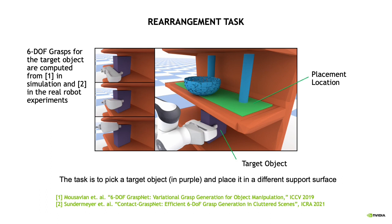More concretely, the rearrangement task entails picking a targeted object, shown in purple, and placing it in a specified support surface, shown in green. We assume access to prior work of six-DOF grasping and instance segmentation.